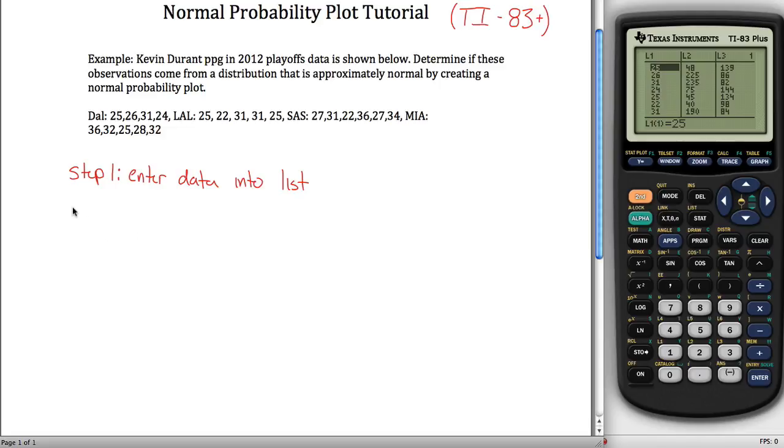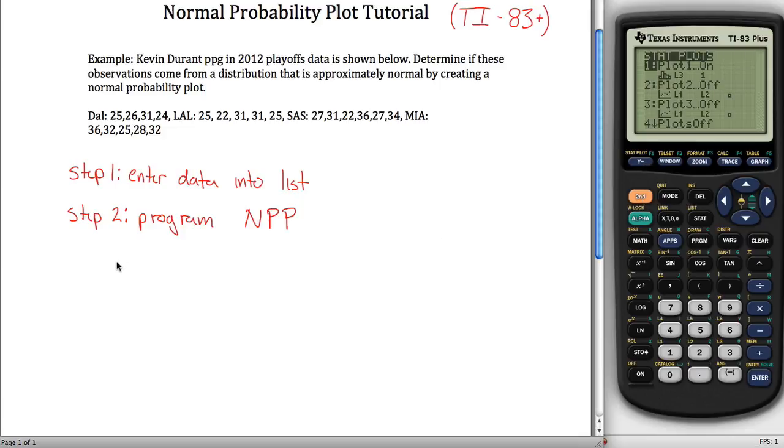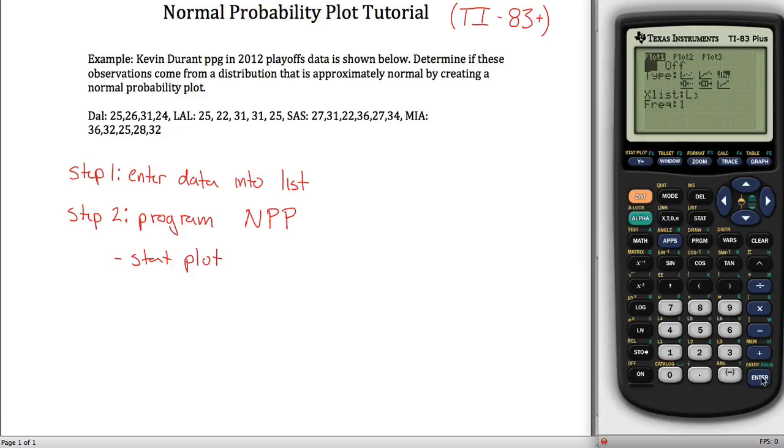Step two is to program the normal probability plot. The way you do that is you go under stat plots here. If you hit second and then Y equals, that's stat plot on this calculator, and then hit enter. It's the sixth type. Make sure it's on, and then if you go down to type here, this first type is scatter plots, here's some histograms, here's the box plot. The sixth type here is what we use for normal probability plots.